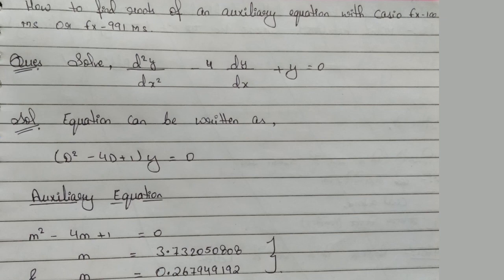Now we can use the auxiliary equation. In the auxiliary equation, we replace D by m, and the right hand side is replaced by 0. So here our right hand side is already 0. So what will it be? m² - 4m + 1 = 0.